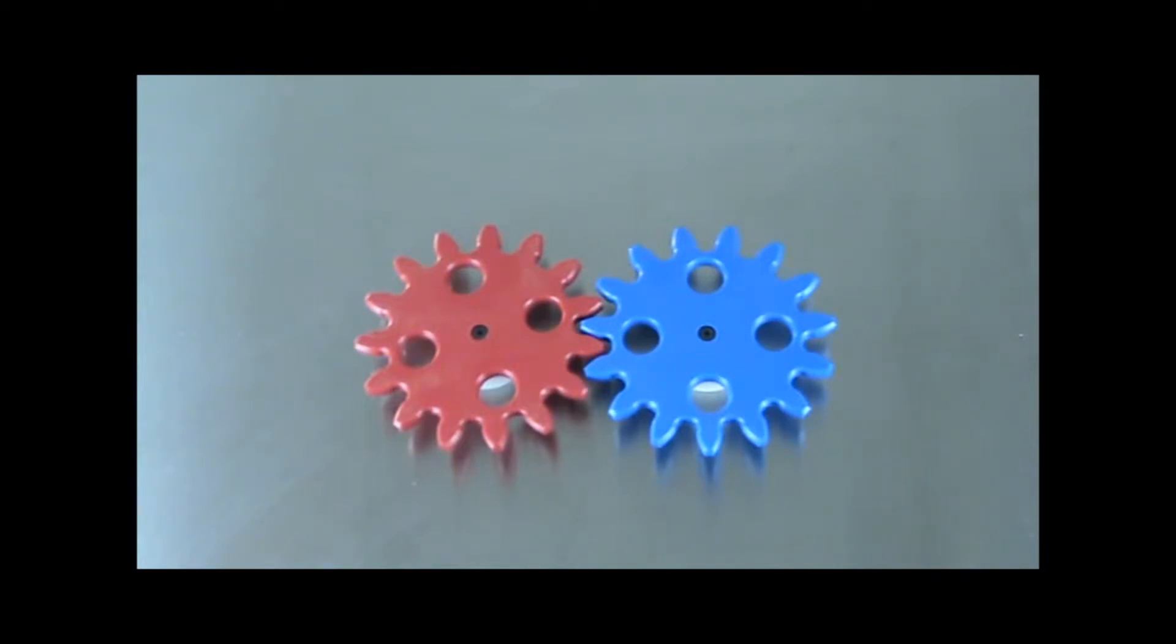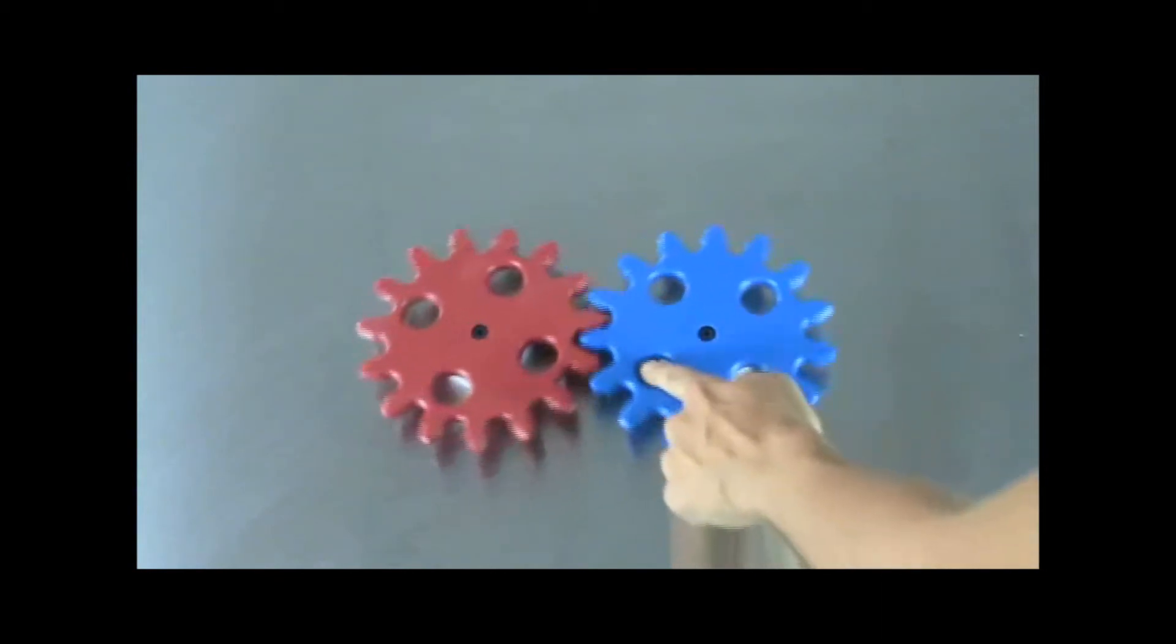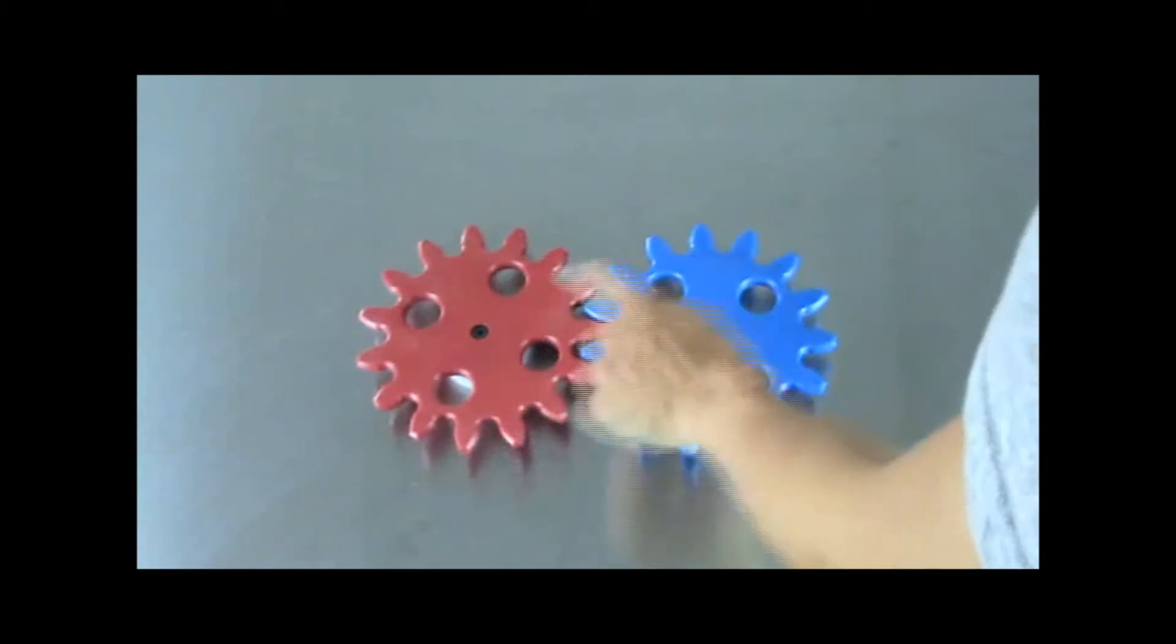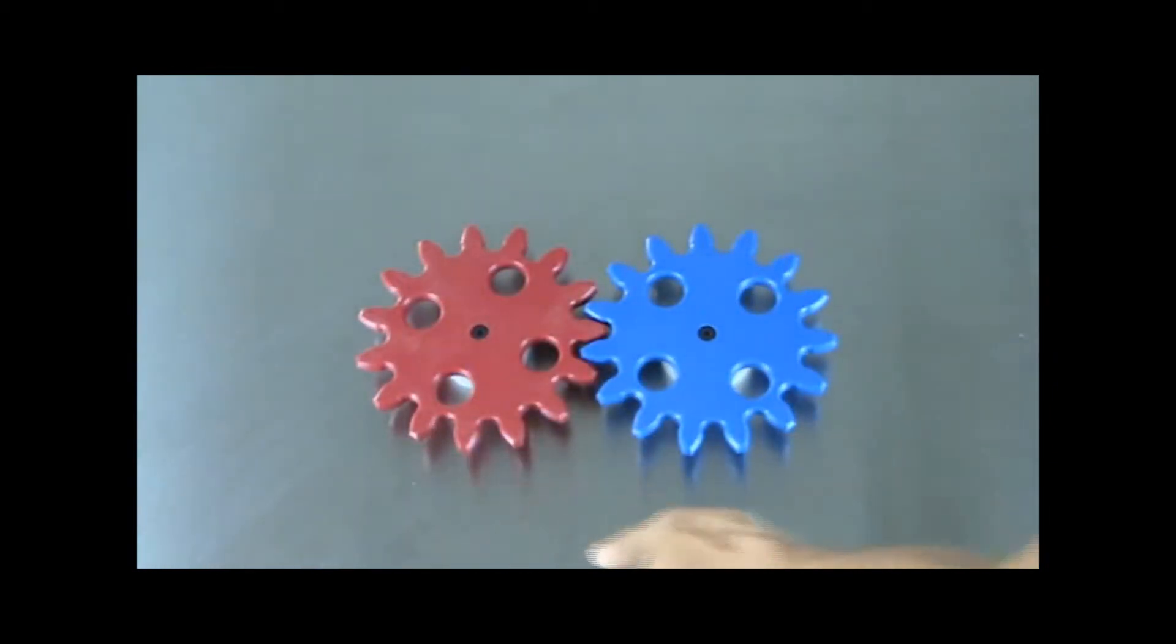For example, here I have two gears at the same size. As I apply a force to the blue gear, the result is the movement of the second gear but in the opposite direction. This allows for gears to redirect the way an applied force moves through a system. So now we've changed the direction of the force but not the amount of the force.